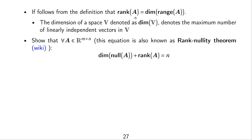The rank of A equals the dimension of the range of A, since the range consists of all linear combinations of the column vectors and the rank is the maximum number of linearly independent column vectors. The rank-nullity theorem states that the dimension of the null space of A plus the rank of A equals n, for a matrix A ∈ R^(m×n).